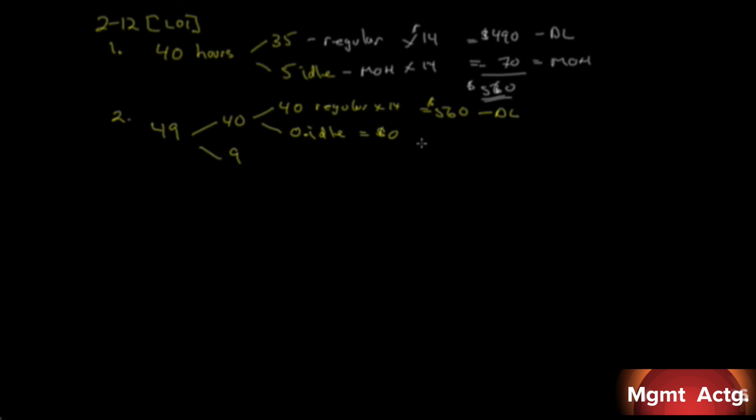40 hours regular times $14 equals $560, and this is direct labor. This is zero, so we'll ignore it. Of the nine hours of overtime, how do we deal with that? Well, overtime is dealt with this way. The nine hours are charged two different ways. You have the base rate of $14 an hour, and then you have your overtime rate, which is seven, because it's time and a half. The pay is $14, so time and a half is 21. So these nine hours, Greg will make $21 an hour.